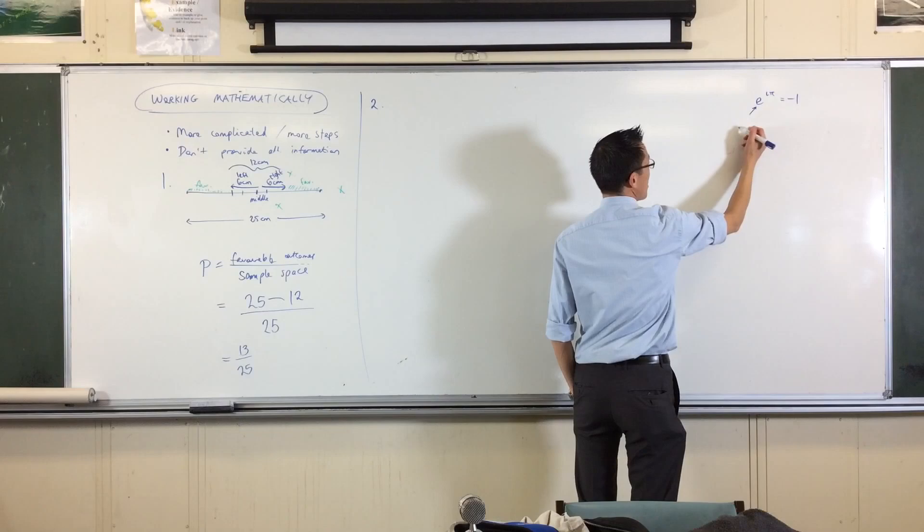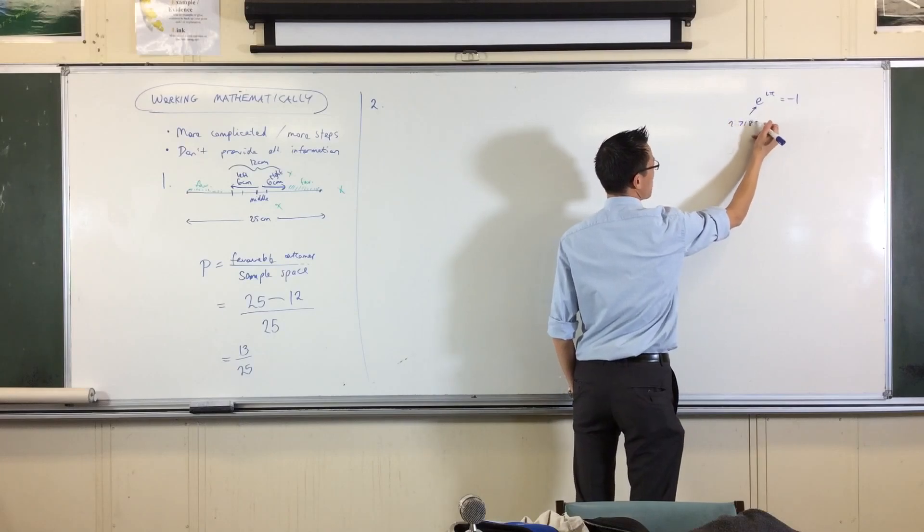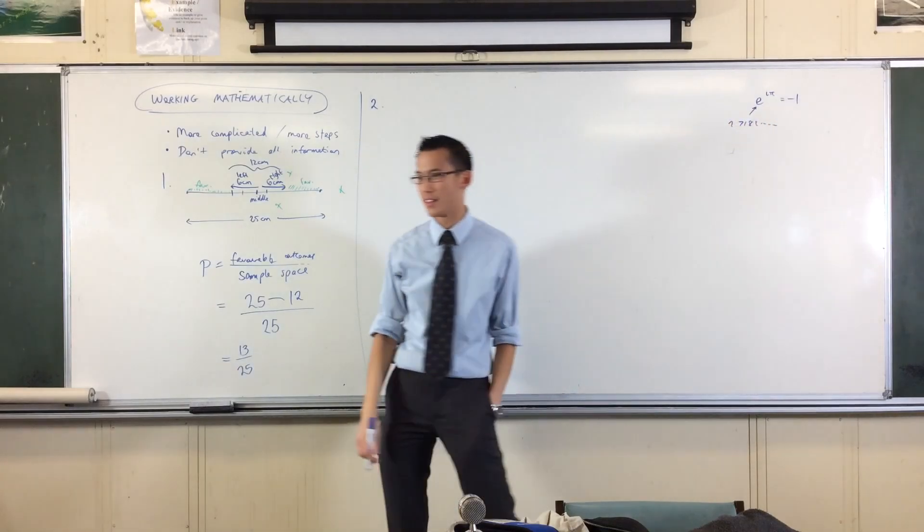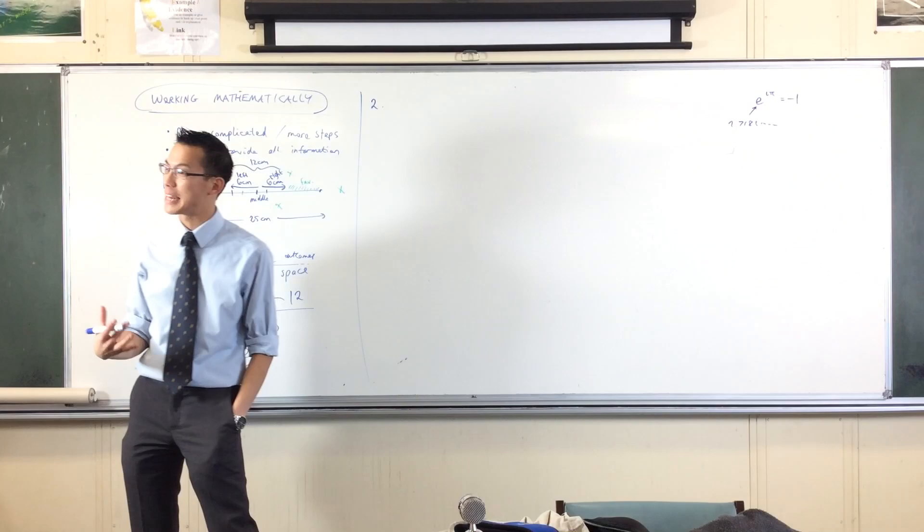E, E is 2.7182 blah blah blah, it's an important constant. It has to do with exponential growth.